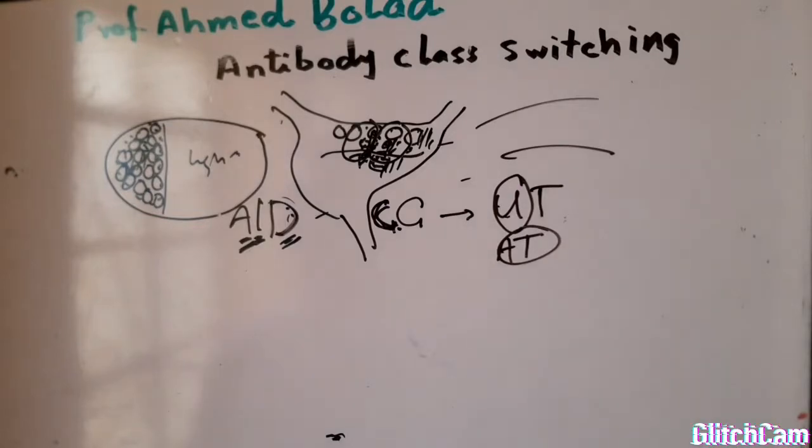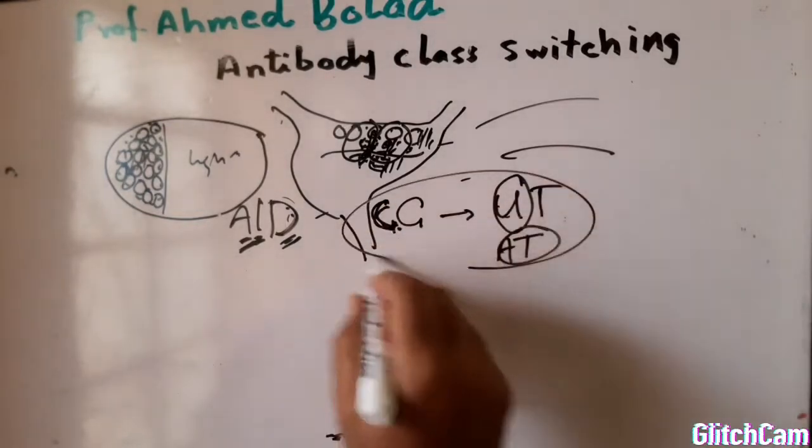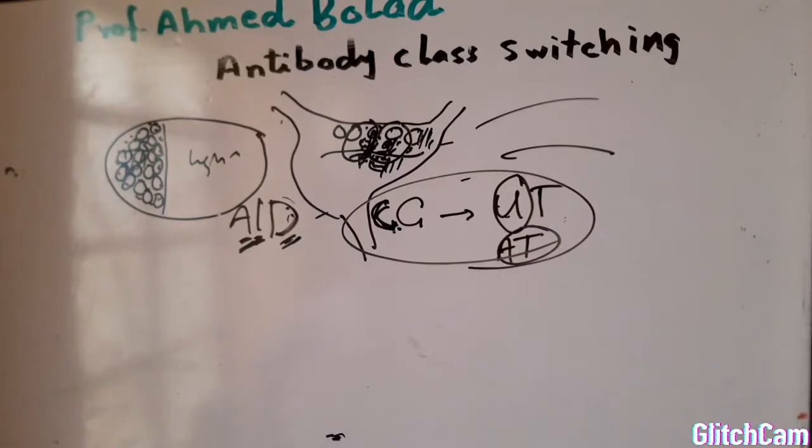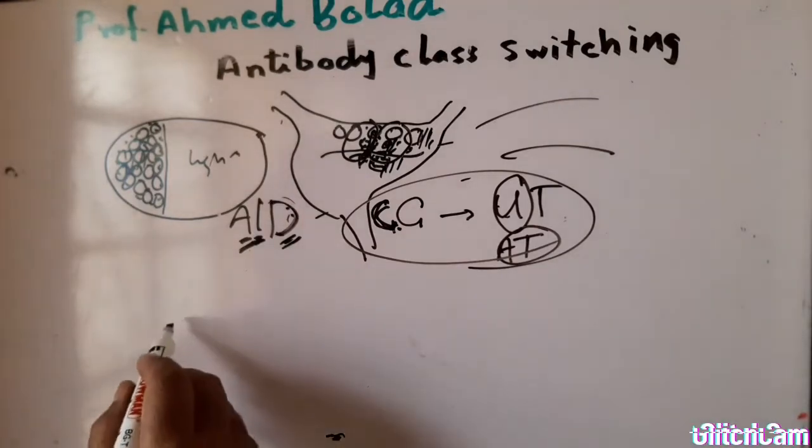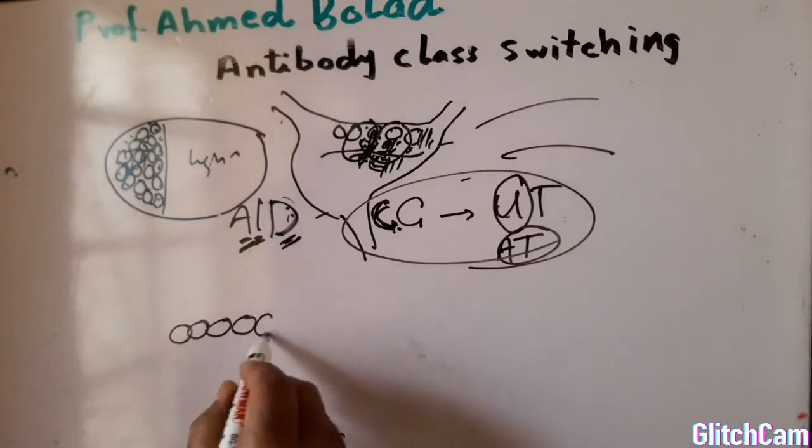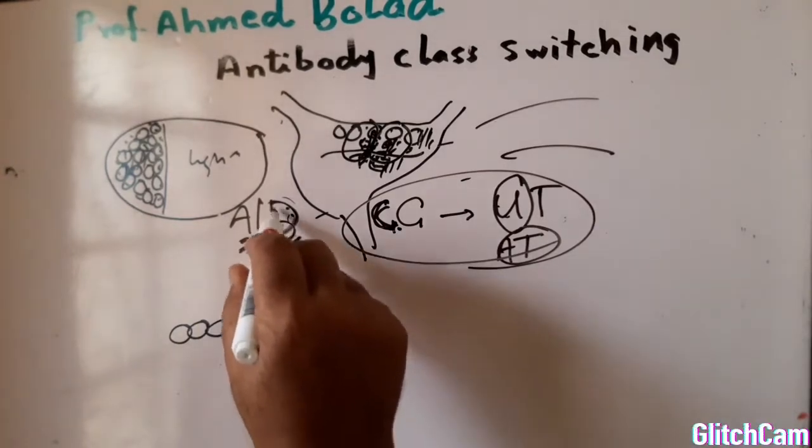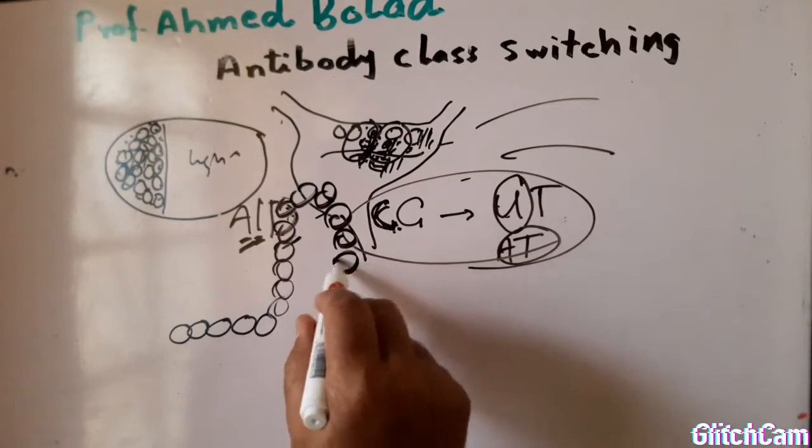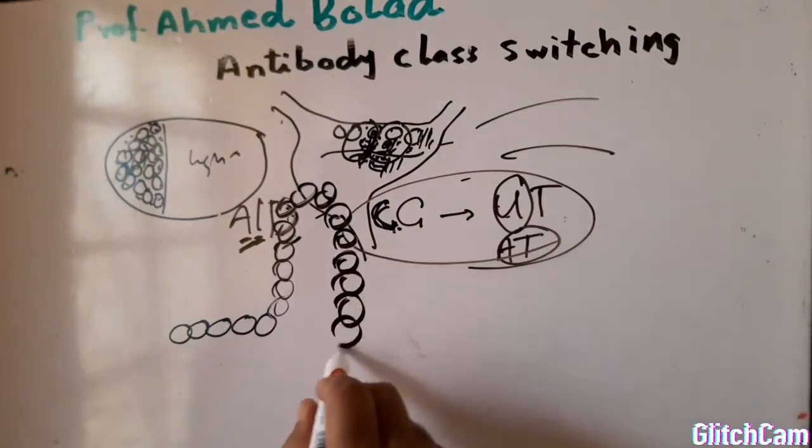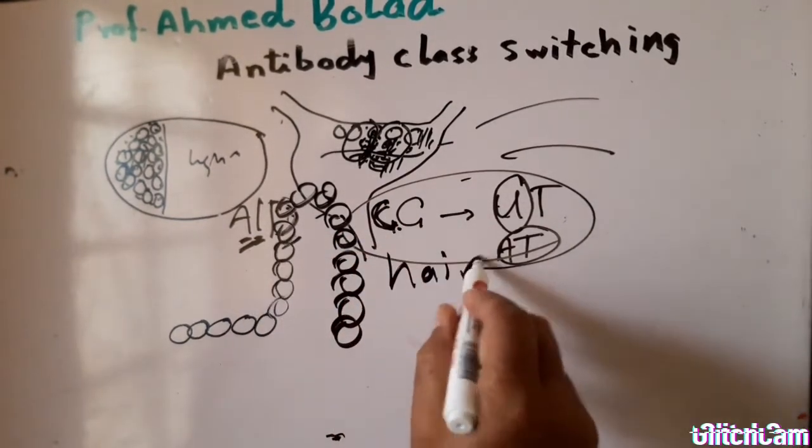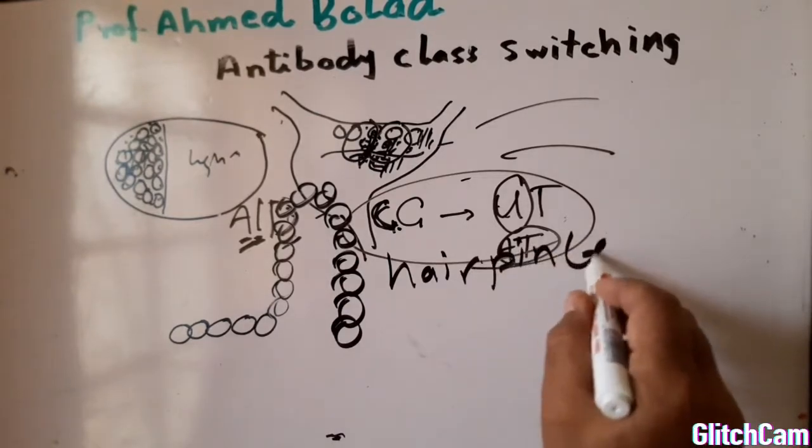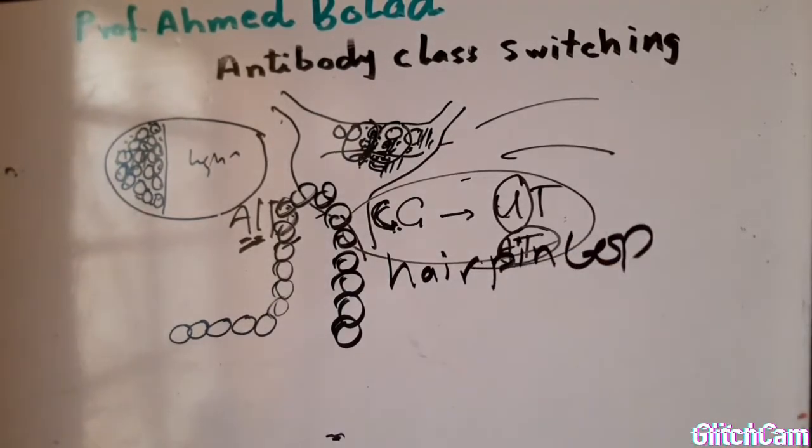As you know, the messenger RNA has the capacity to fold, and this leads to formation of hairpin loops.